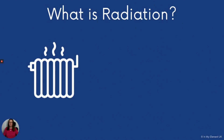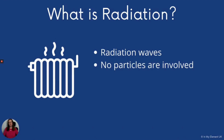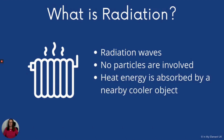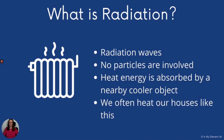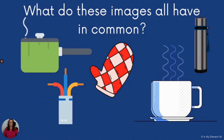The other process you need to know about is radiation. With radiation, waves are involved — no particles. When a hot object is releasing energy to its surroundings, it can do this by radiation: the waves carry heat energy to the surroundings or a nearby object, and they don't need to be touching. The cooler object absorbs the radiation and begins to warm up, while the hotter object begins to cool down. We often heat our houses this way.